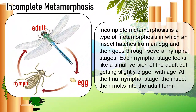Incomplete metamorphosis is a type of metamorphosis in which an insect hatches from an egg and then goes through several nymphal stages. Each nymphal stage looks like a small version of the adult but gets slightly bigger with age. At the final nymphal stage, the insect then molts into the adult form.